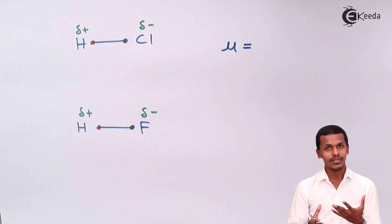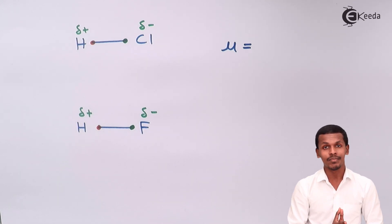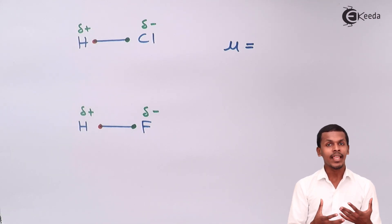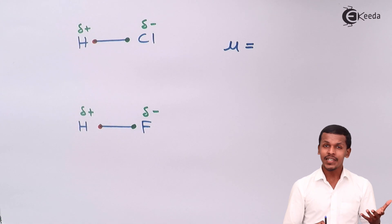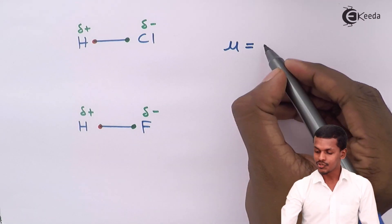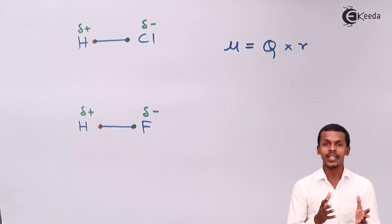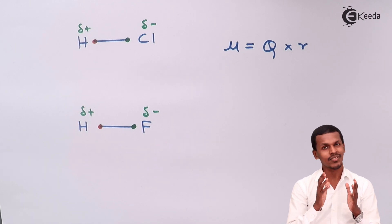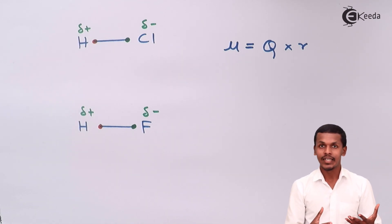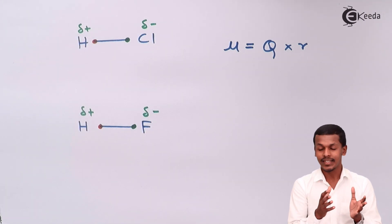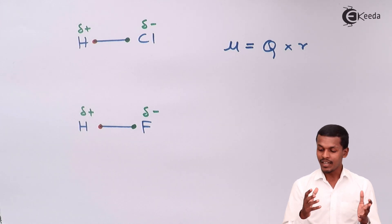Mu is known as the dipole moment. Dipole moment is a measurement of the polar nature of a covalent bond, denoted by μ. It is actually the product of Q and R, where Q is the magnitude of the charges — which can be positive or negative — and R is the distance between the positive charge and the negative charge. So μ = Q × R, the product of charge magnitude and the distance between the two poles.